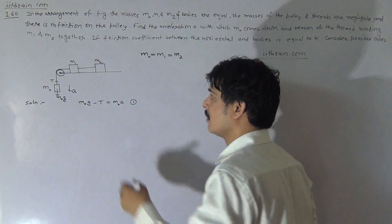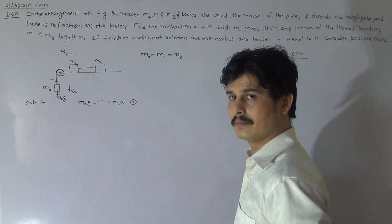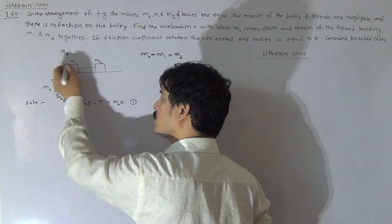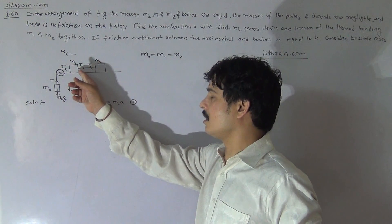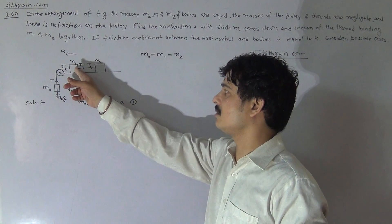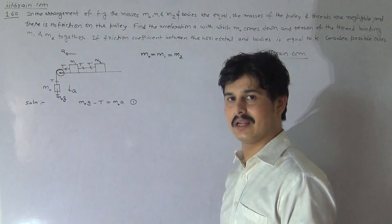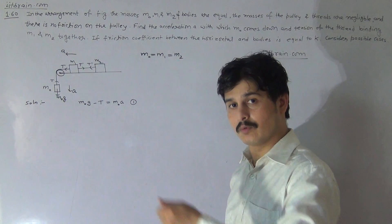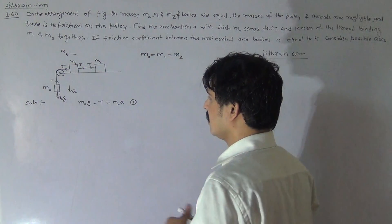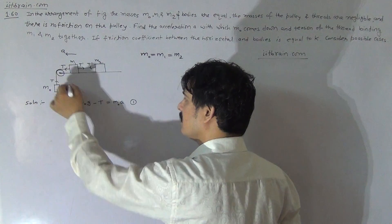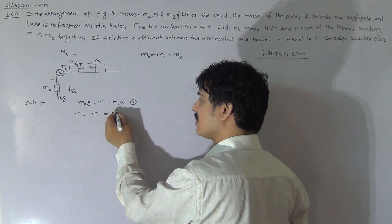This is the first equation in scalar form. If M0 is moving with acceleration A, then the other two blocks will also move with acceleration A. If the tension in the vertical string is T, then it will be T in that string also. Let the tension in the string connecting M1 and M2 be T'. So T' is the tension by this thread on M1, and T is the tension on M1 by the other thread. For this body, T acts forward and T' acts backward, so T minus T' equals M1a — the second equation.